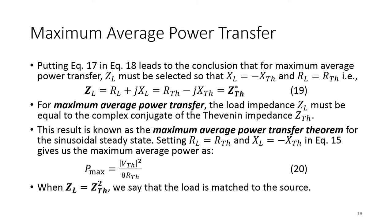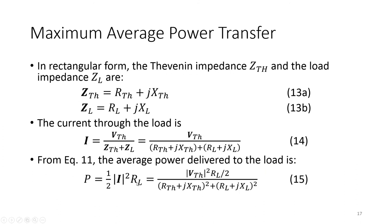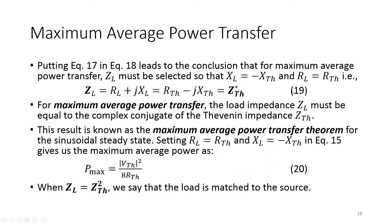For maximum average power transfer, the load impedance must equal the complex conjugate of the Thevenin equivalent impedance. When we substitute these values back into the power equation, the maximum average power is Pmax = VTH² / (8·RTH). When ZL equals the conjugate of ZTH, we say the load is matched with the source — the condition for maximum power transfer is fulfilled.